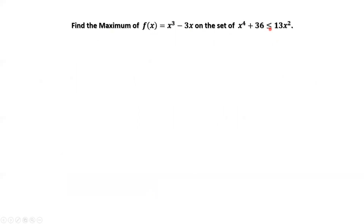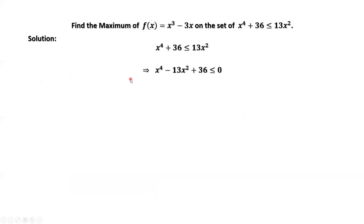That means we need to solve this inequality to find the set first. How to solve this inequality? Move everything to the left-hand side and factor. We have (x² - 9)(x² - 4) ≤ 0.